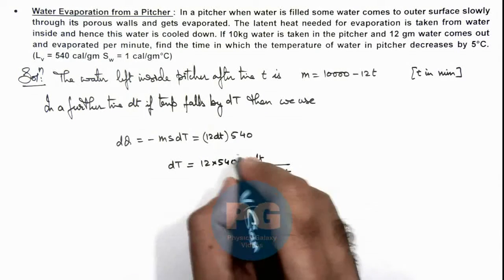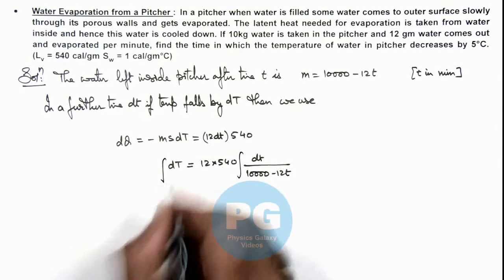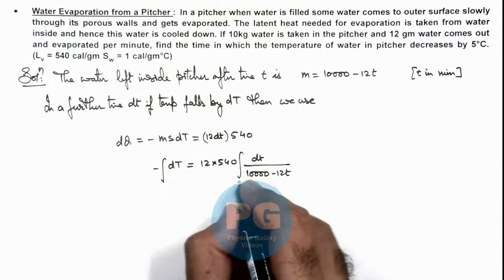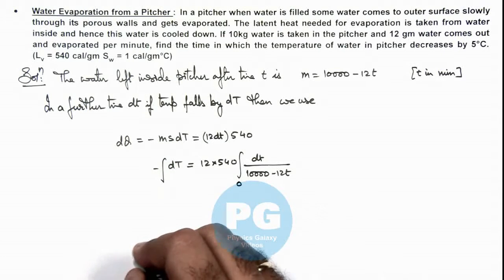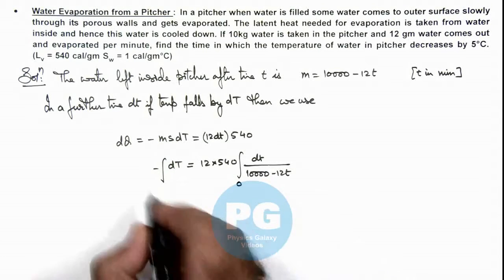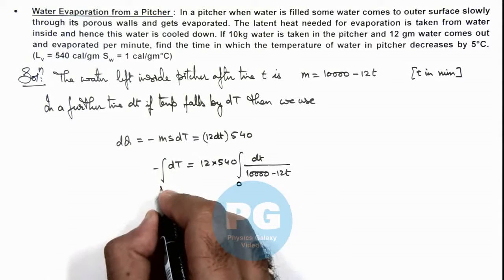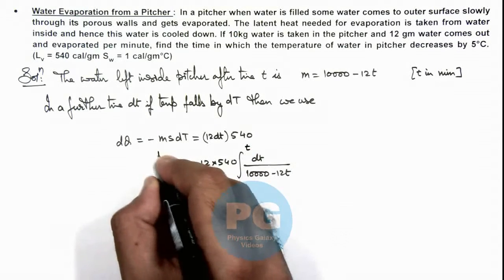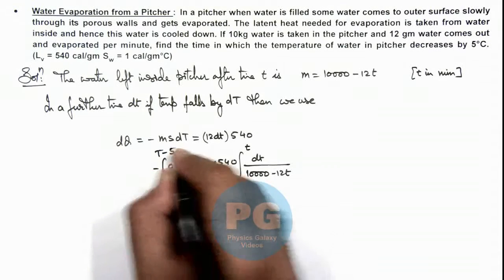Now if we integrate this relation and here we can use a negative sign, where at time zero we can say if temperature was T and in time t temperature drops by 5 degree, so this can be written as T minus 5.